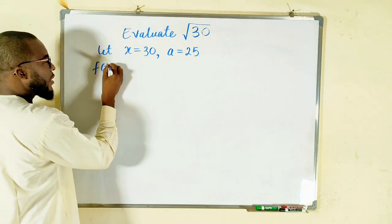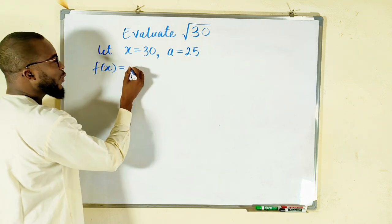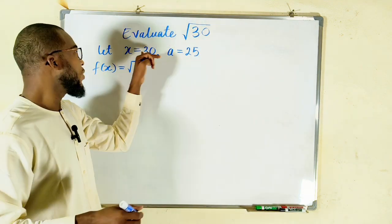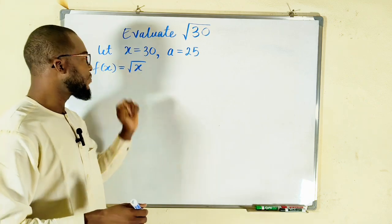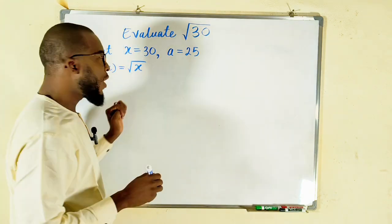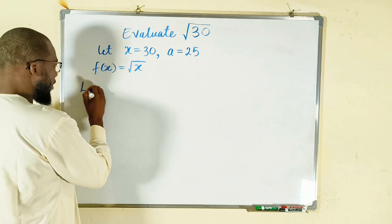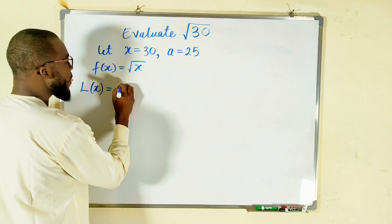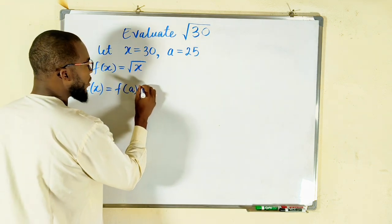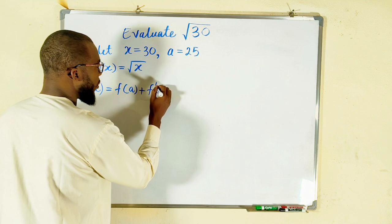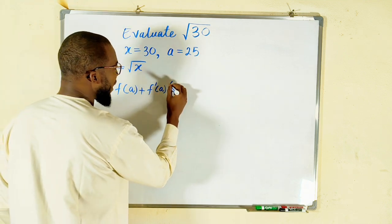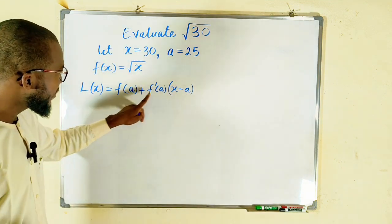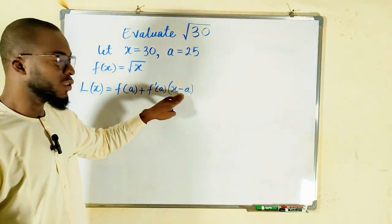So our function f(x) is equal to the square root of x. Remember, I have let 30 be equal to x. Therefore, the function will be the square root of x. So to find that square root by linearization, the linearization of x, which is L(x), will be equal to f(a) plus f'(a) multiplied by x minus a. So this is our formula. We need to find this, this, and multiply by this.